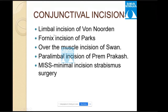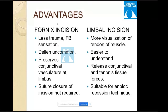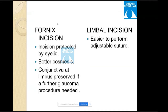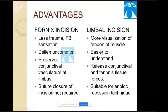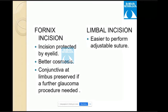Conjunctival incisions used in squint surgery include limbal incision, fornix incision over the muscle, para-limbal incision, and minimal incision strabismus surgery. The most commonly used are limbal (von Noorden) and fornix (Parks). Fornix incision advantages: less trauma, less foreign body sensation, dellen uncommon, preserves limbal vasculature, suture closure not required, incision protected by eyelid, better cosmesis, and limbal conjunctiva is preserved for future glaucoma procedures. Limbal incision advantages: better visualization of tendon, easier to learn, releases subconjunctival tissue, suitable for hang-back recession, easier for adjustable sutures.